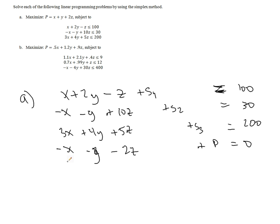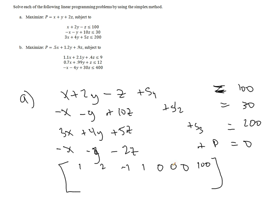We begin to set this up in our tableau. We have 1, 2, 3 slack columns plus the variables and RHS, giving us a 4 by 8 matrix. The first row is 1, 2, negative 1, then 1, 0, 0, 0 equals 100.